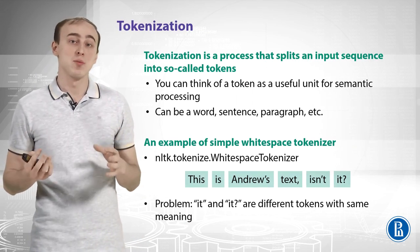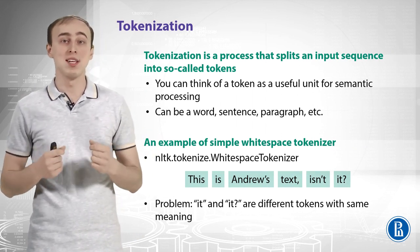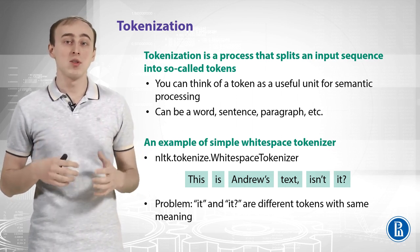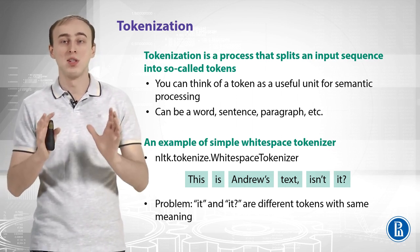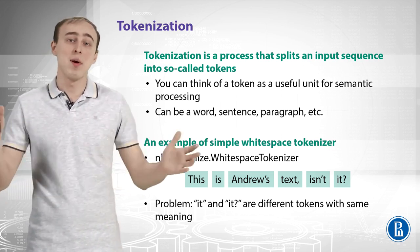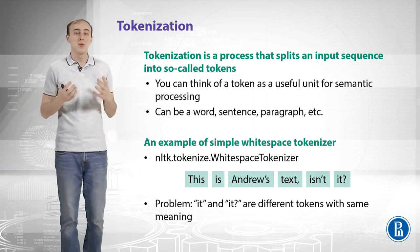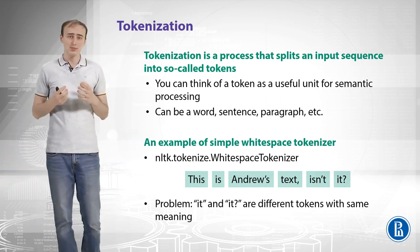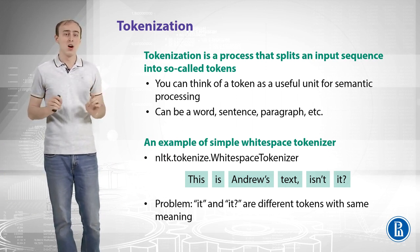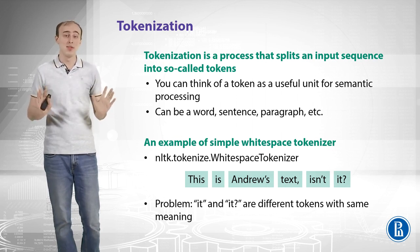The process of splitting an input text into meaningful chunks is called tokenization, and each chunk is called a token. You can think of a token as a useful unit for further semantic processing — it can be a word, a sentence, a paragraph, or anything else. Let's look at the example of a simple whitespace tokenizer, which splits the input sequence on whitespace characters such as spaces or any other non-visible character.